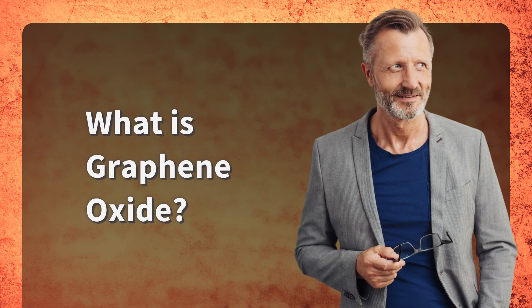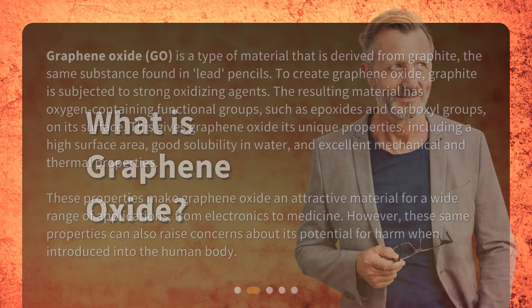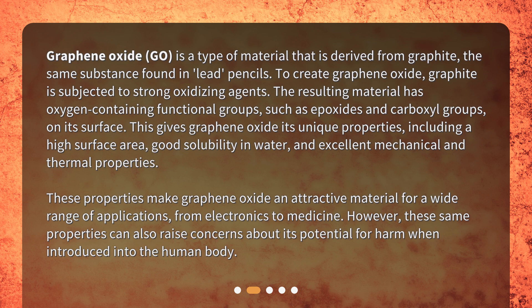What is graphene oxide? Graphene oxide, or GO, is a type of material that is derived from graphite, the same substance found in lead pencils. To create graphene oxide, graphite is subjected to strong oxidizing agents. The resulting material has oxygen-containing functional groups, such as epoxides and carboxyl groups, on its surface.